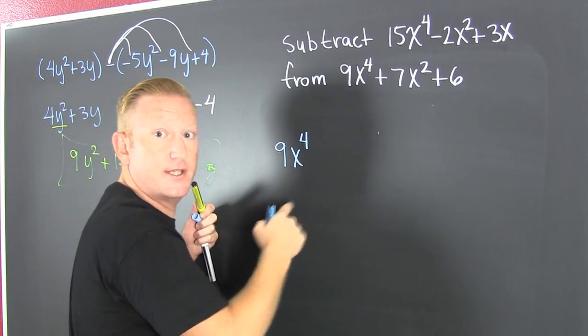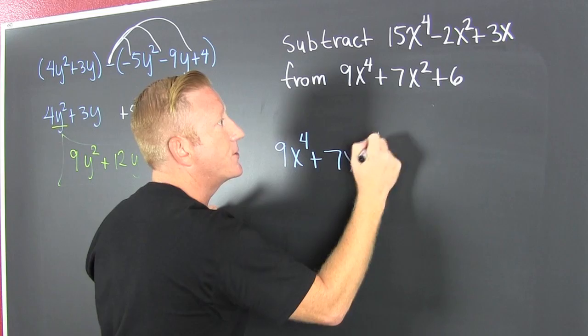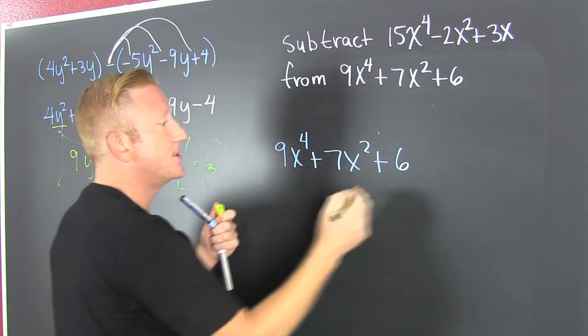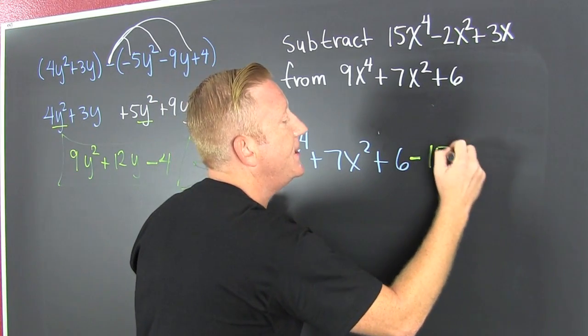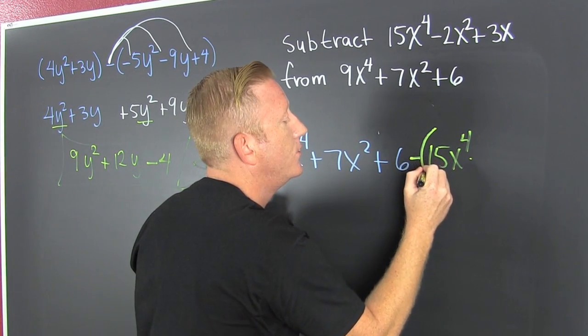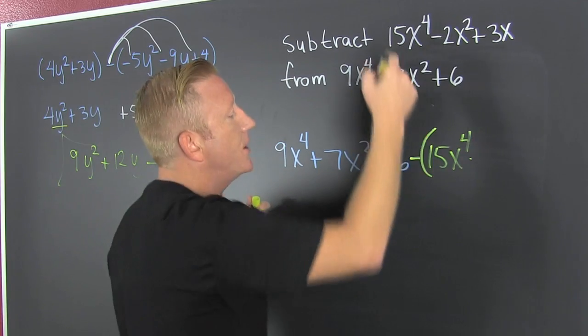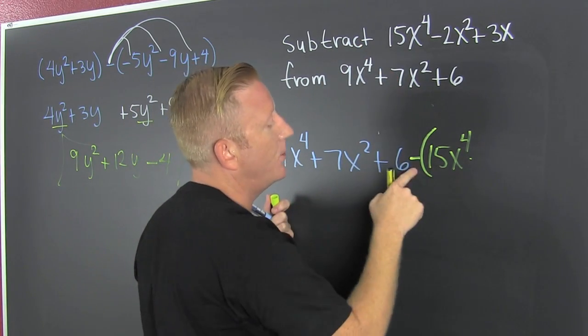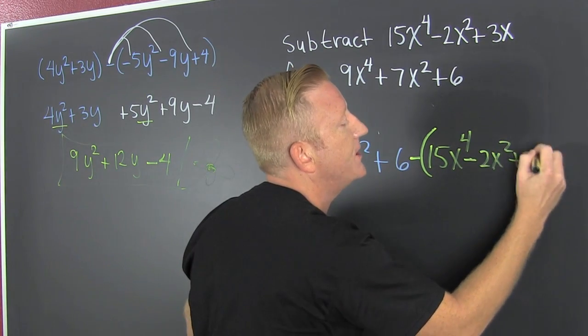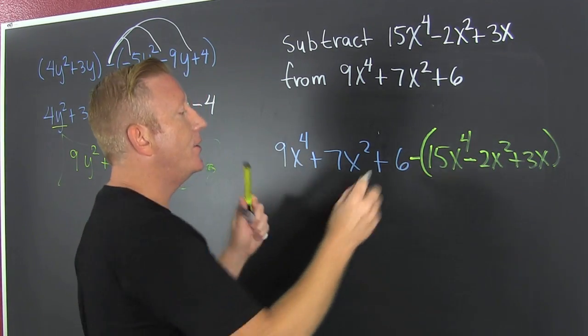From (9x⁴ + 7x² + 6), and then I'm gonna subtract minus 15x⁴. Caution, that's why it's in yellow. So this from that, minus (-2x² + 3x). Now it goes like that last example.